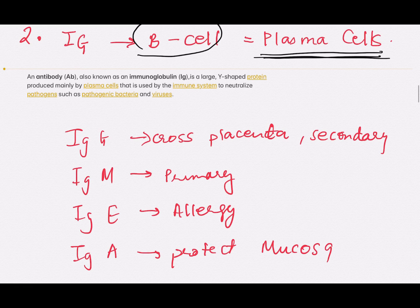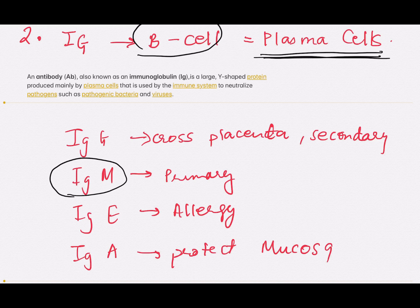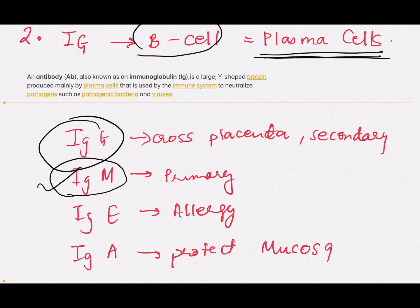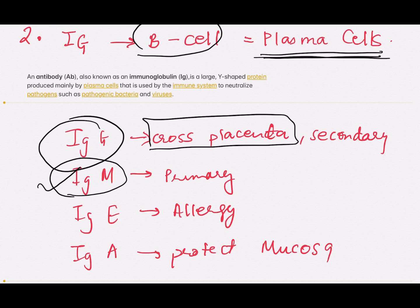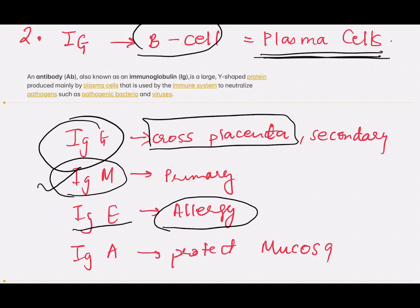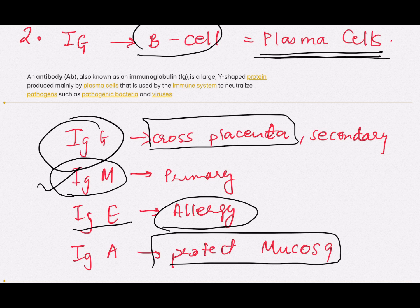There are various types of immunoglobulins. IgM is the immunoglobulin primarily produced first after any new infection — the first immune response is IgM. After some time, IgG is produced as the second response. IgG is the only immunoglobulin that crosses the placenta. IgE is generated during any allergic reaction. IgA helps in protecting our mucosa from any infection. You should know about these important immunoglobulins.